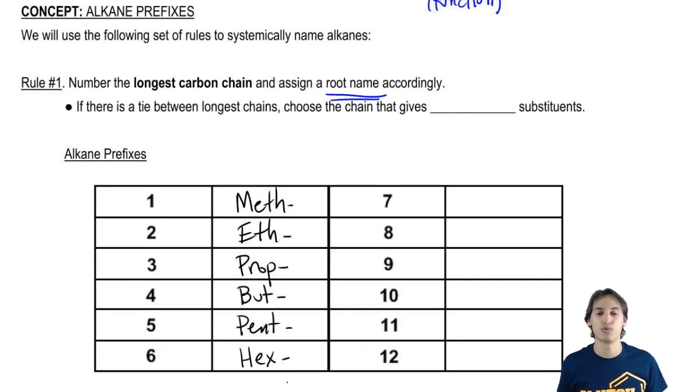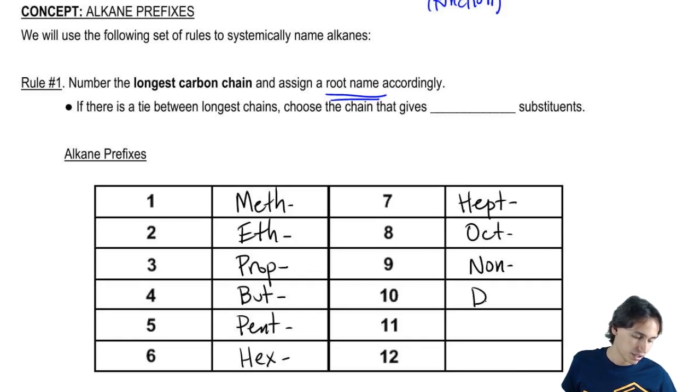Now, this one gets people sometimes when you start at 7. It's not sept, it's hept. Okay? Hept, oct, non, dek. Okay? So those aren't so bad.